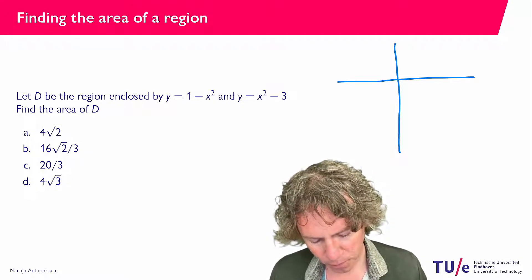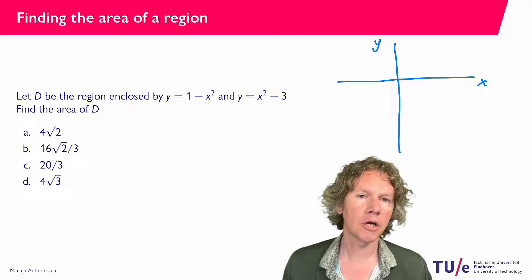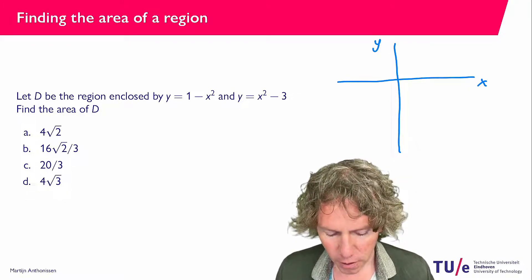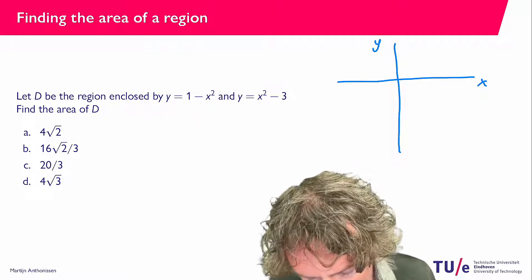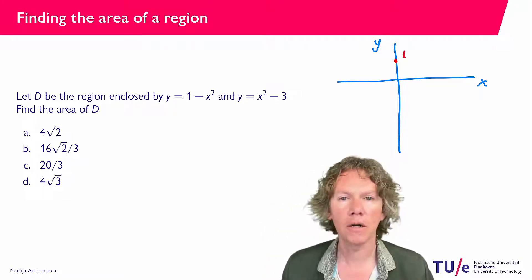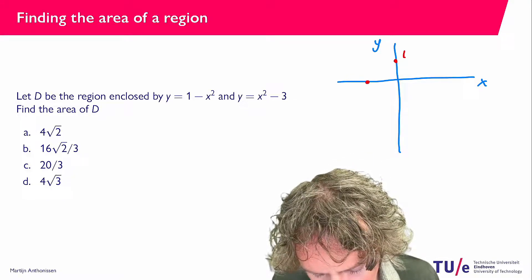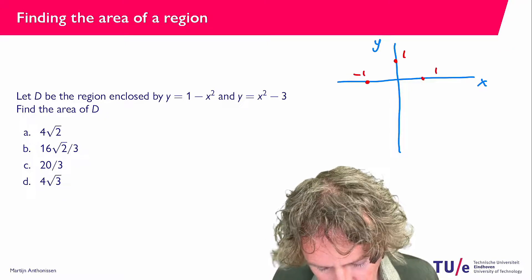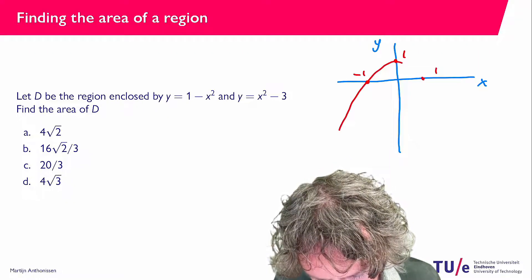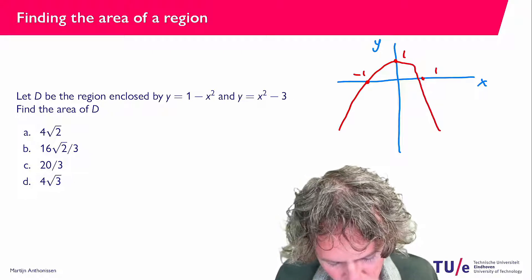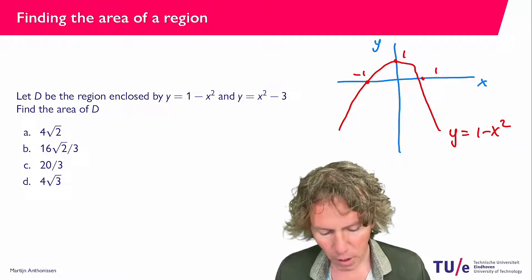I'm going to plot two axes: the x-axis and the y-axis. The first parabola is y equals 1 minus x squared. If you plug in x equals 0, then y equals 1, so that point is on the parabola. For x equals 1 or minus 1, those are also on the parabola. So it is symmetric through all three points — this is a sketch of y equals 1 minus x squared.